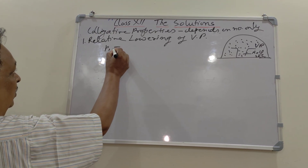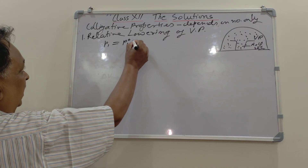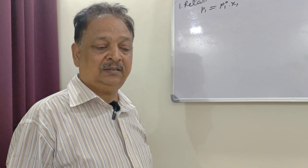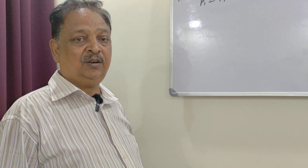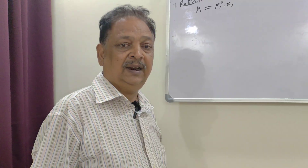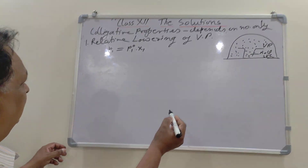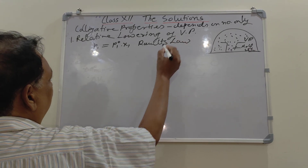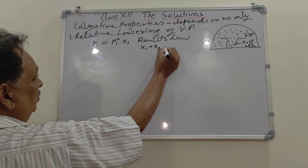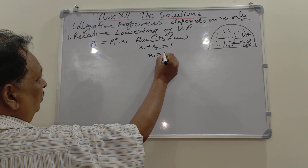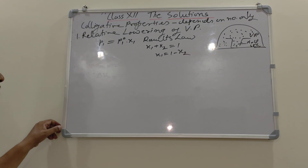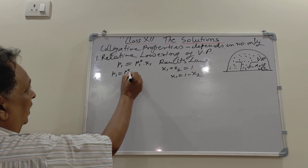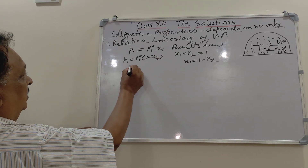This vapor pressure is called P1. According to Raoult's Law, P1 is equal to P01 multiplied by X1, where component one is the solvent (say, water) and component two is any non-volatile solute like NaCl. We also know that X1 plus X2 equals 1, therefore X1 equals 1 minus X2. So P1 equals P01 multiplied by (1 minus X2), which equals P01 minus P01·X2.